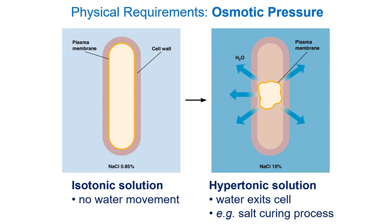In an isotonic solution, we have the same amount of solute inside and outside the cell, so there's no net movement of water. In a hypertonic solution, there's much more solute outside — less water outside — so water is pulled out of the cell. We create hypertonic solutions when we cure meat with salt or pickle things, which removes water from bacteria and causes problems with their metabolic rate.